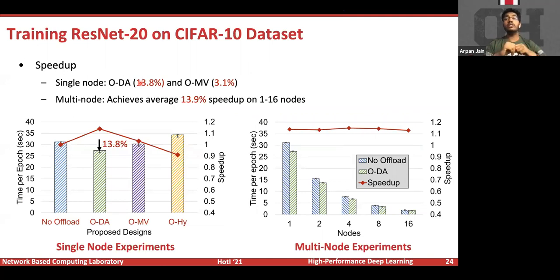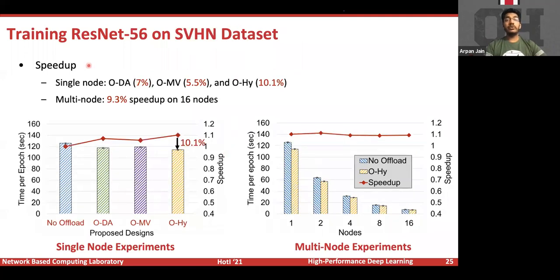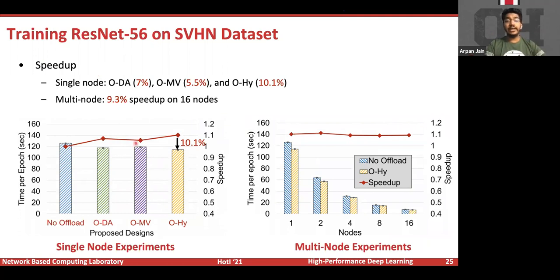For ResNet-20 on CIFAR-10, offloading data augmentation gives the best performance: on a single node we achieved around 13.8 percent speedup, and scaling to 16 nodes gave a consistent average of 13.9 percent speedup. For ResNet-56 on the SVHN dataset — which is similar to CIFAR-10 but uses a larger model — training takes more time on CPU, so we added validation offloading to the DPU as well. The hybrid design achieved up to 10.1 percent speedup on a single node and 9.3 percent on 16 nodes.